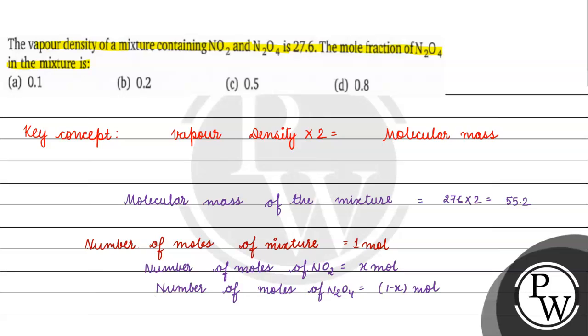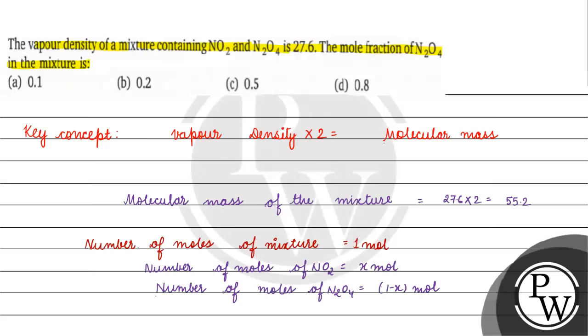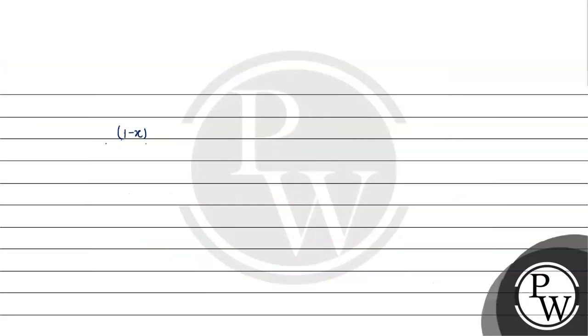Now if we need to calculate, x ki value, 1 minus x which is basically the number of moles of N2O4, multiply it with 92 which is the molecular mass of N2O4.